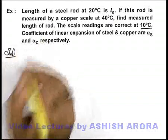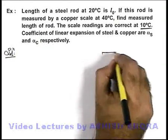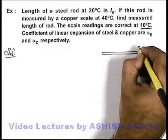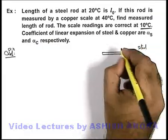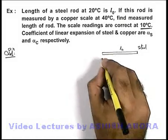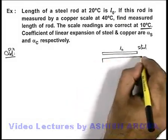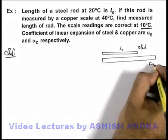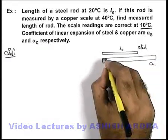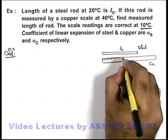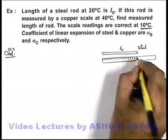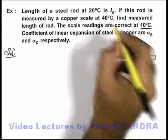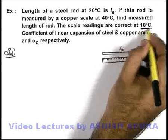Re-analyzing the situation: we are given a steel rod, and at 20 degree centigrade the length of this steel rod is l₀. We are measuring this steel rod using a copper scale, on which the divisions are made, and exactly the division lengths are accurate at 10 degree centigrade.